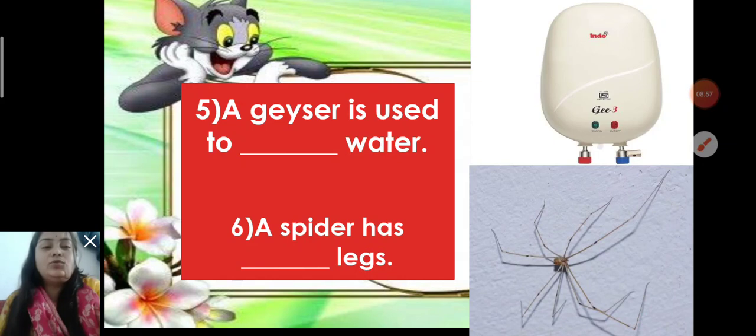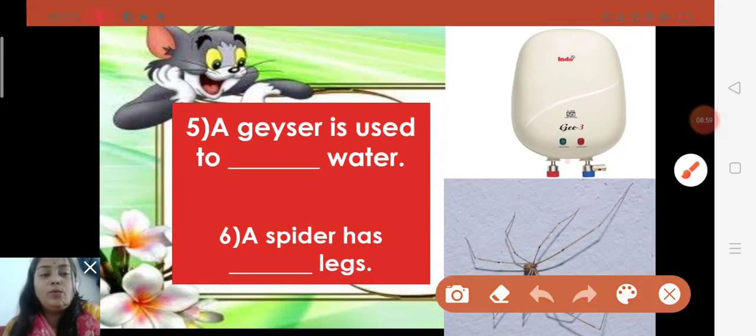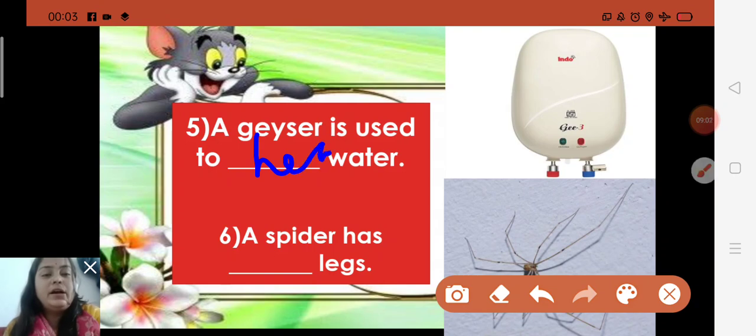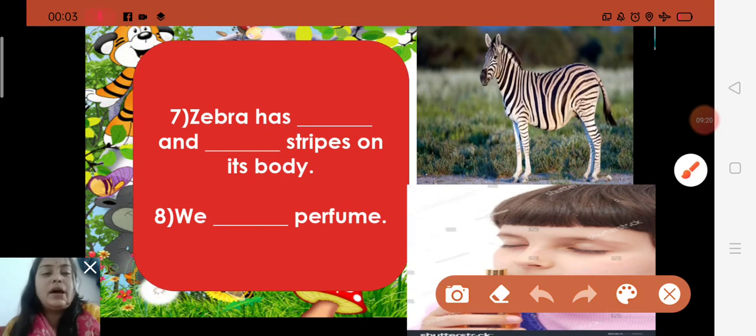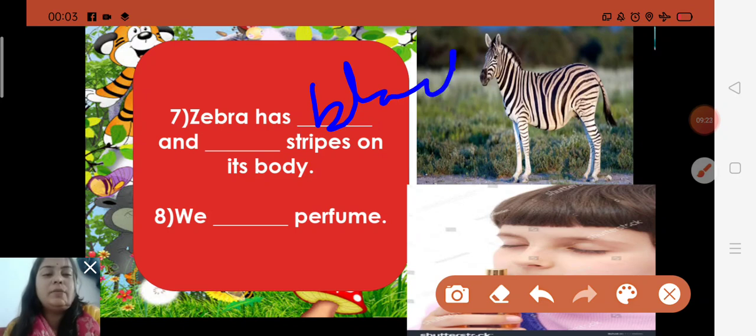Now, next, a geyser is used to heat water, to cold water, to heat water. Yes, there you will write heat. A geyser is used to heat water. Spider has how many legs? So, you can count and write. Spider has eight legs. Now, zebra has black and white strips on its body. Yes, zebra has black and white. B-L-A-C-K, black and white, W-H-I-T-E, white. A zebra has black and white strip on its body.